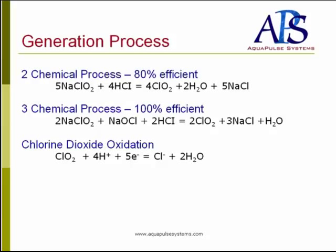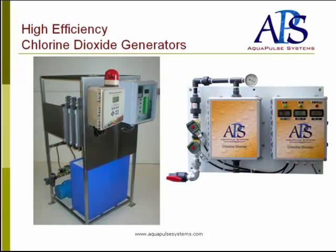The three-chemical process utilizes sodium chlorite, sodium hypochlorite, and hydrochloric acid, and efficiencies approaching 100% can be achieved. Generators come in all different shapes and sizes. These are the three-chemical systems on the left-hand side, where you make chlorine dioxide instantly, and it's stored in a small tank as you can see at the bottom of the frame.